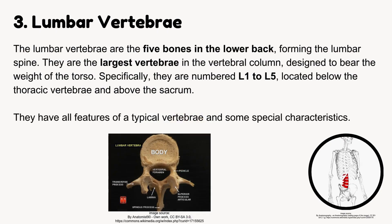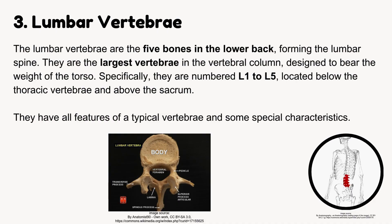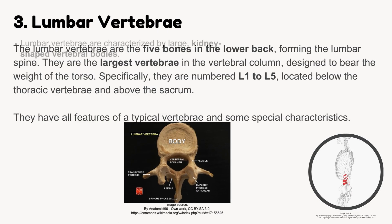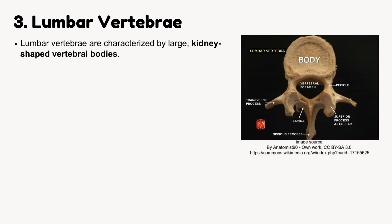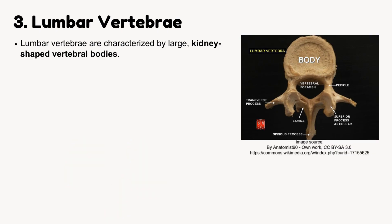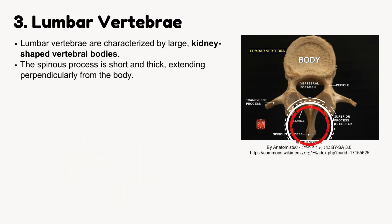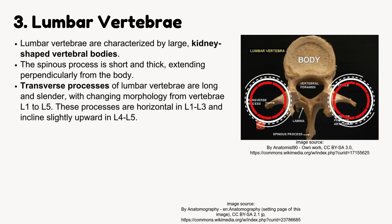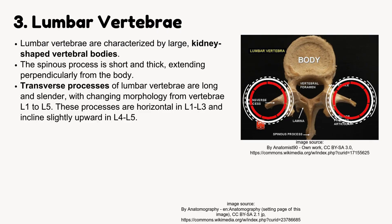They have all features of a typical vertebrae and some special characteristics. Lumbar vertebrae have large, kidney-shaped vertebral bodies. The spinous process is short and thick, extending perpendicularly from the body. Transverse processes are long and slender, with changing morphology from L1 to L5.